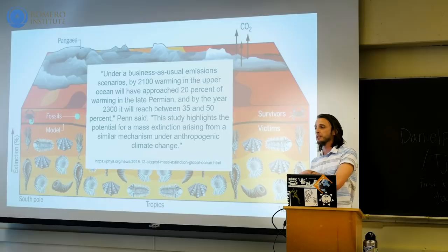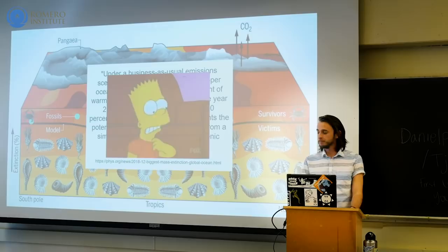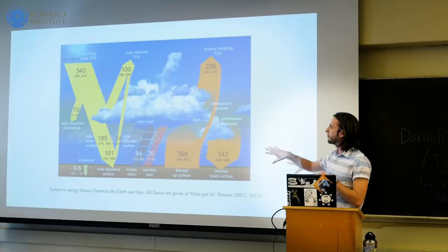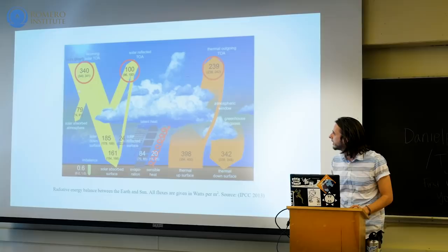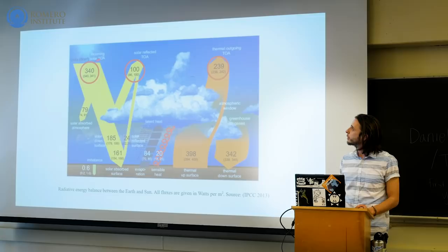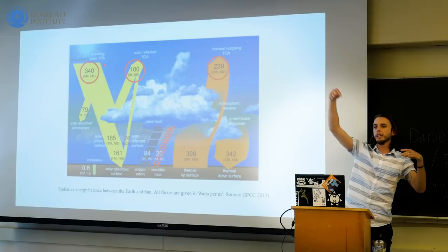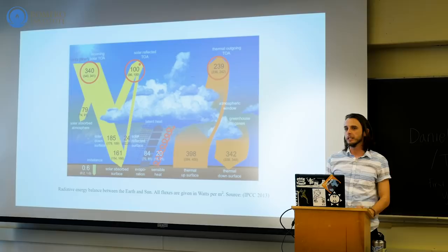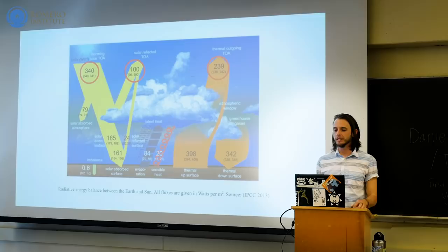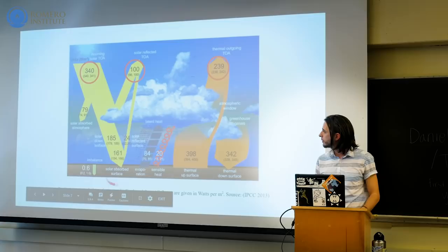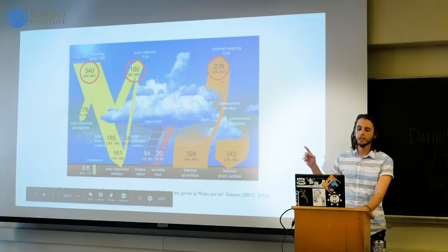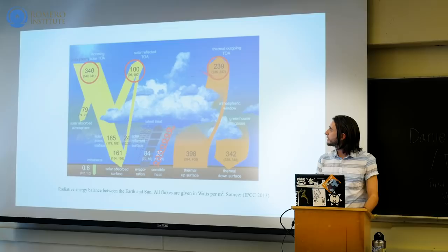This is a conceptual model with numbers attached showing the energy balance of the Earth. At the top of the atmosphere, incoming solar radiation comes in. About 100 units — 100 watts per meter squared — gets reflected off immediately, right back into space, giving us that nice planetary shine. The rest interacts with the atmosphere or Earth's surface, gets absorbed, and comes back out as thermal energy. But the numbers don't quite add up: 340 minus 100 minus 239 is not zero, and that's because of greenhouse gases in the atmospheric window — the infrared absorption band.